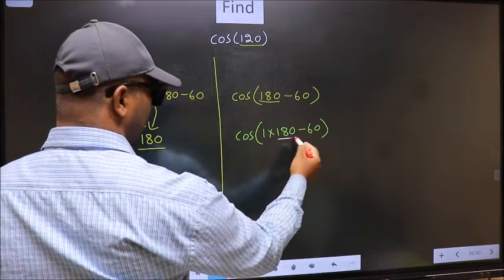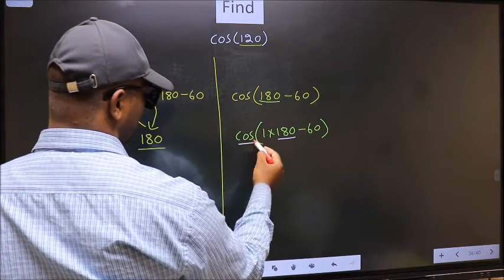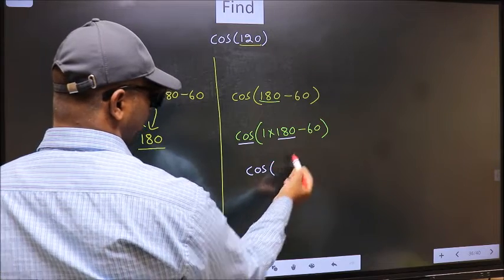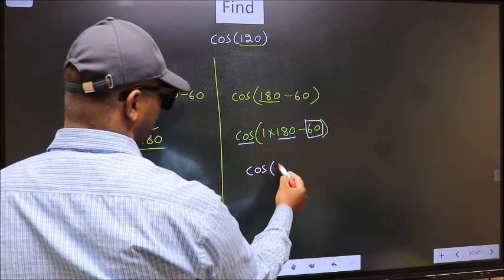Next, here we have 180. So, cos is not going to change. It will remain cos. And inside, we get this angle 60.